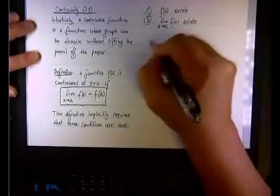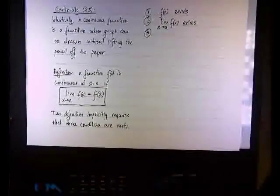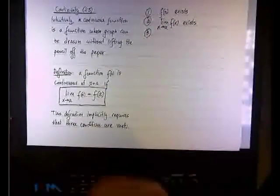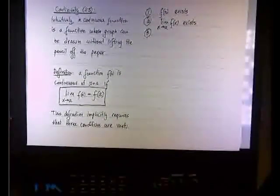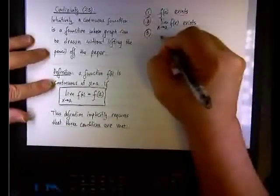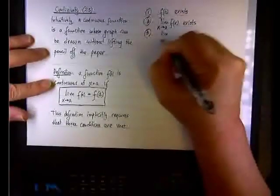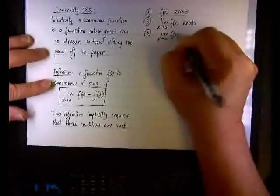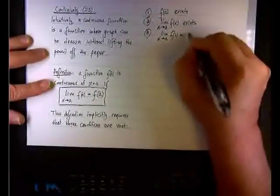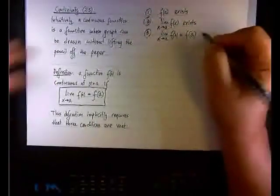And the third condition, sorry, I lost my voice for a second, is really the definition. So we have the left side, the left side exists, the right side exists, and the left side equal the right side. In other words, the limit as x approaches a, the limit of f(x) as x approaches a, actually equal f(a).